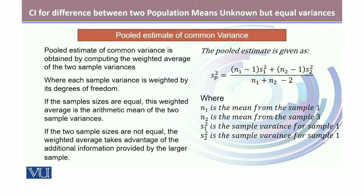The pooled estimate of common variance is obtained by computing the weighted average of the two sample variances, where the first sample variance is S₁² and the second is S₂². Each sample variance is weighted by its degrees of freedom: n₁ − 1 for the first sample and n₂ − 1 for the second. If the sample sizes are equal, this weighted average is simply the arithmetic mean of the two sample variances.